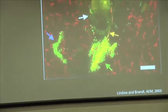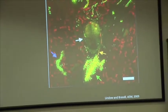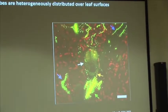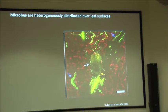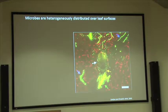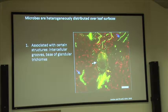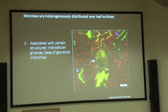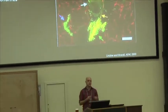Bacteria in particular are not homogeneously distributed over the leaf surface. They're often found in aggregates—either multi-species or single-species aggregates—and they associate with particular leaf structures such as intracellular grooves or the bases of glandular trichomes, which are essentially spots on the leaf surface where nutrients and water are available. They can be found in large, singular, multi-species aggregates.